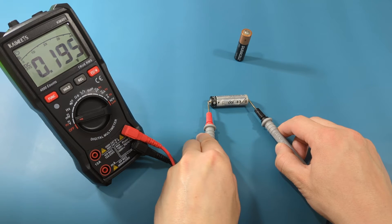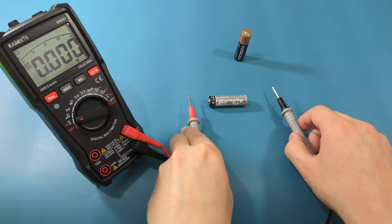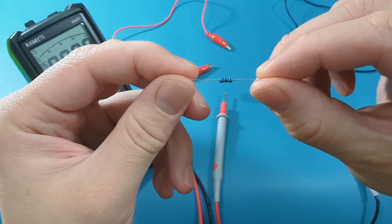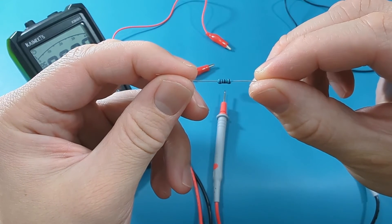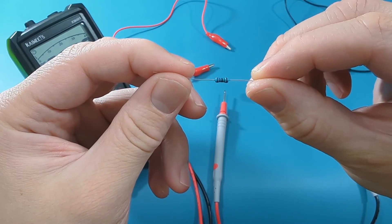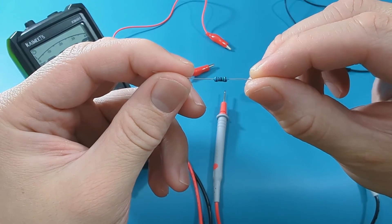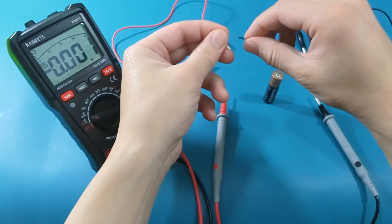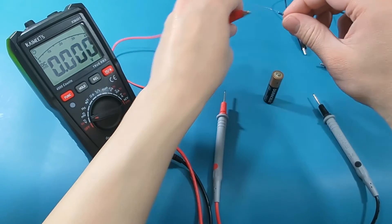To conduct a comprehensive test of the battery, it must be evaluated under a load condition. This involves connecting a resistor to the battery, allowing current to pass through. In this specific scenario, the resistor used has a resistance value of approximately 150 ohms. You can measure the voltage while the current flows through the resistor and the battery.